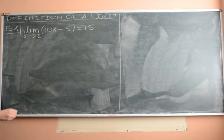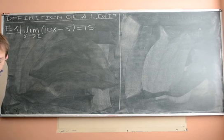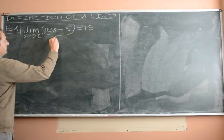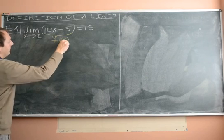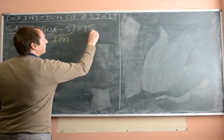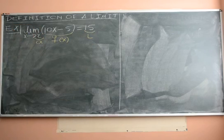So what does the definition say? Let's first identify everything. So this expression here, that's of course f of x. 2, that's our a. And 15, that's L, the value of the limit.